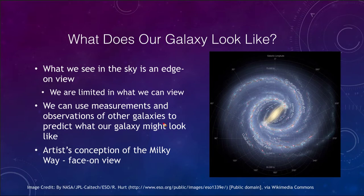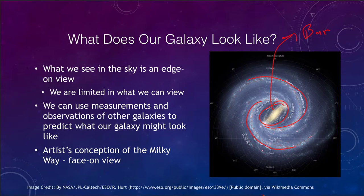An artist's conception shows us the central bulge towards the center, the whole disc, and the distinct spiral arms spiraling out from the center. In our case, we also see a central bar — a bar of material going through the middle of the galaxy. The spiral arms start from the edge of the bar, not from the actual center of the galaxy itself. This is what we might see if we could travel a hundred thousand light years straight up out of our galaxy and look back down.